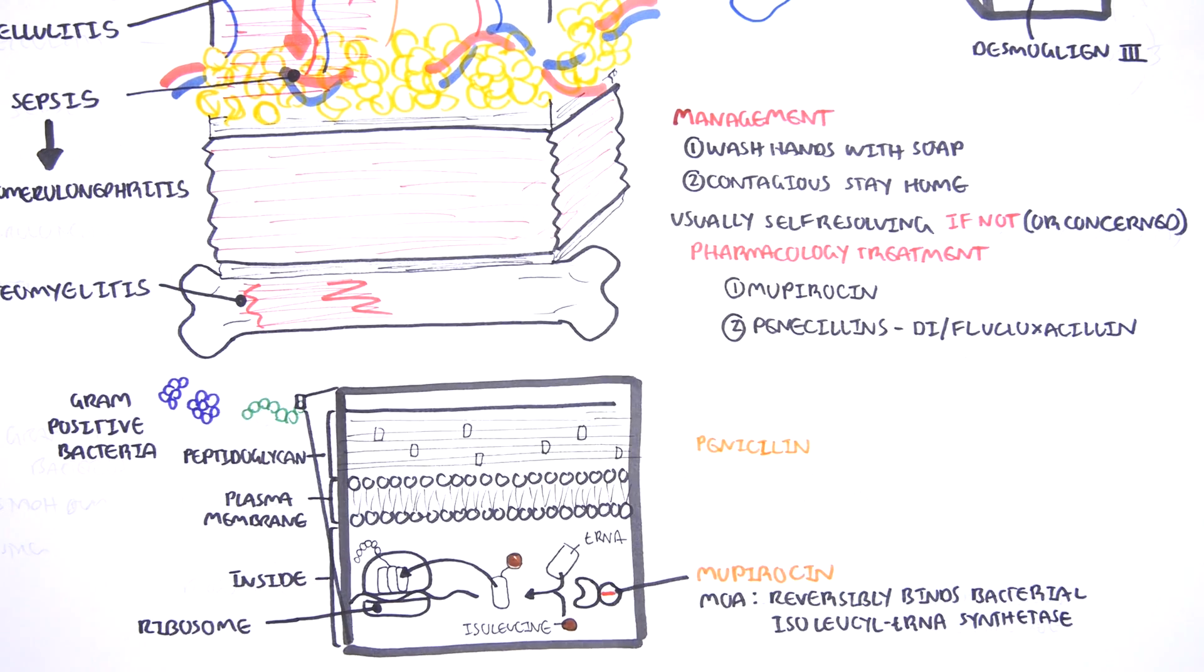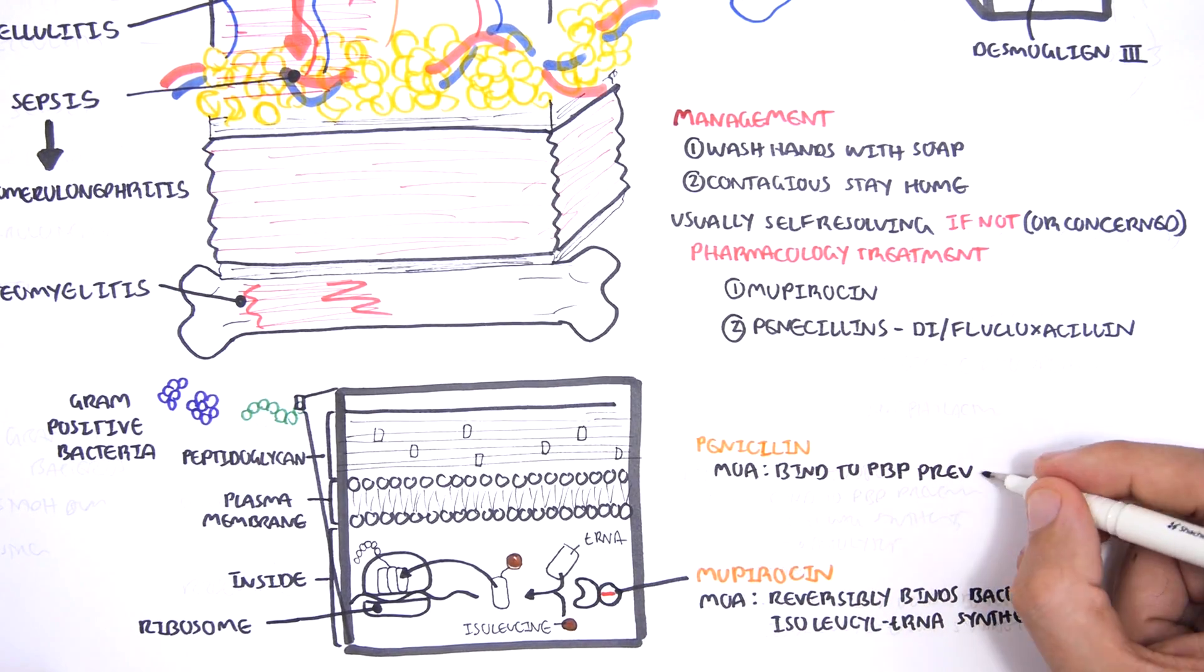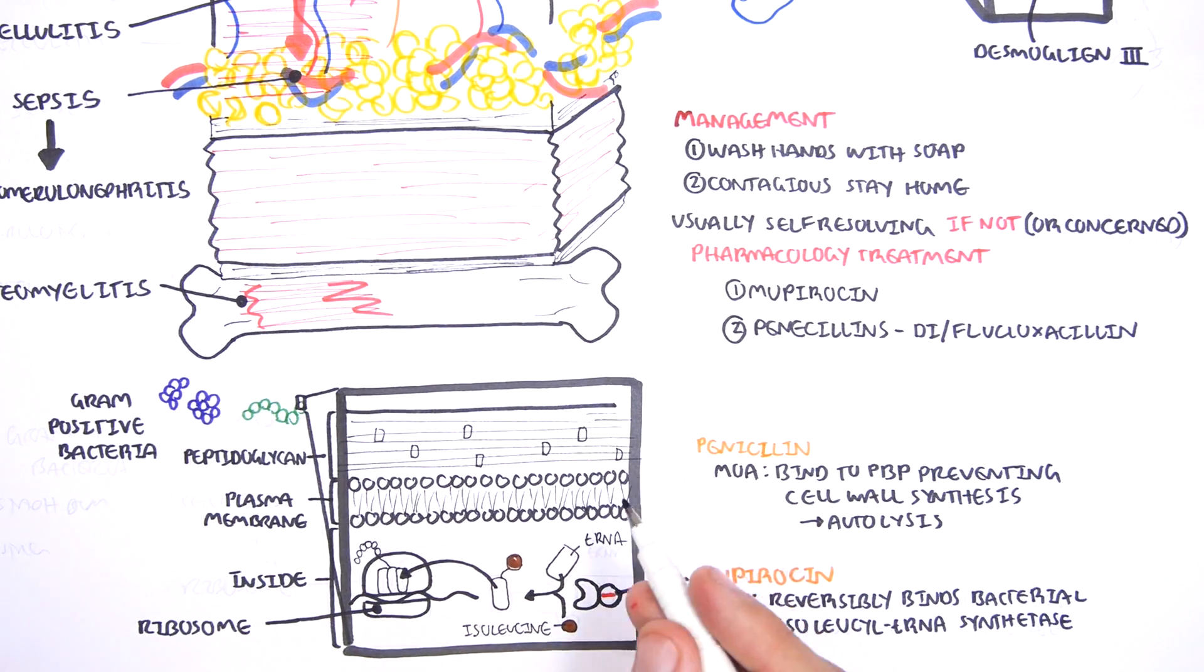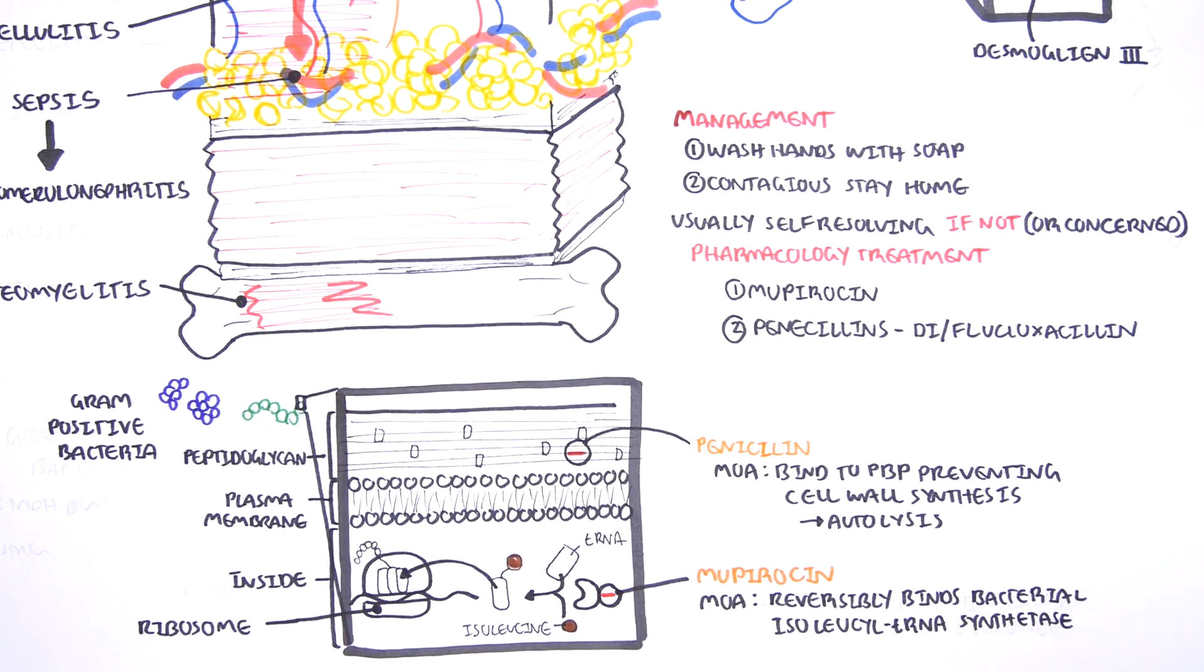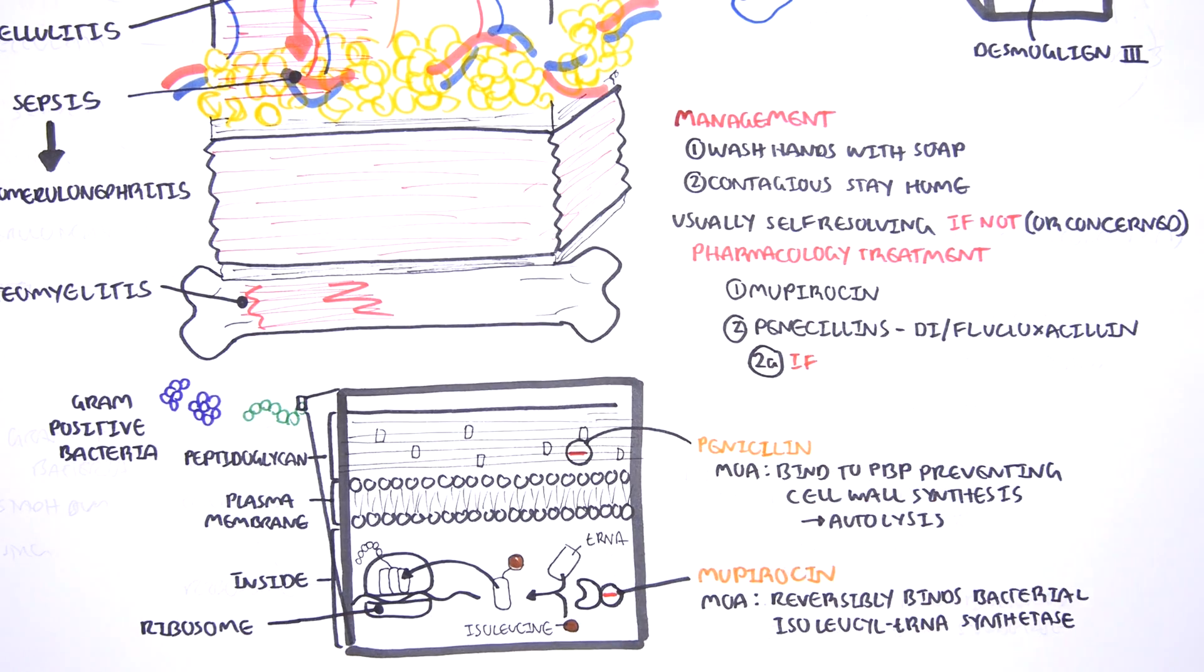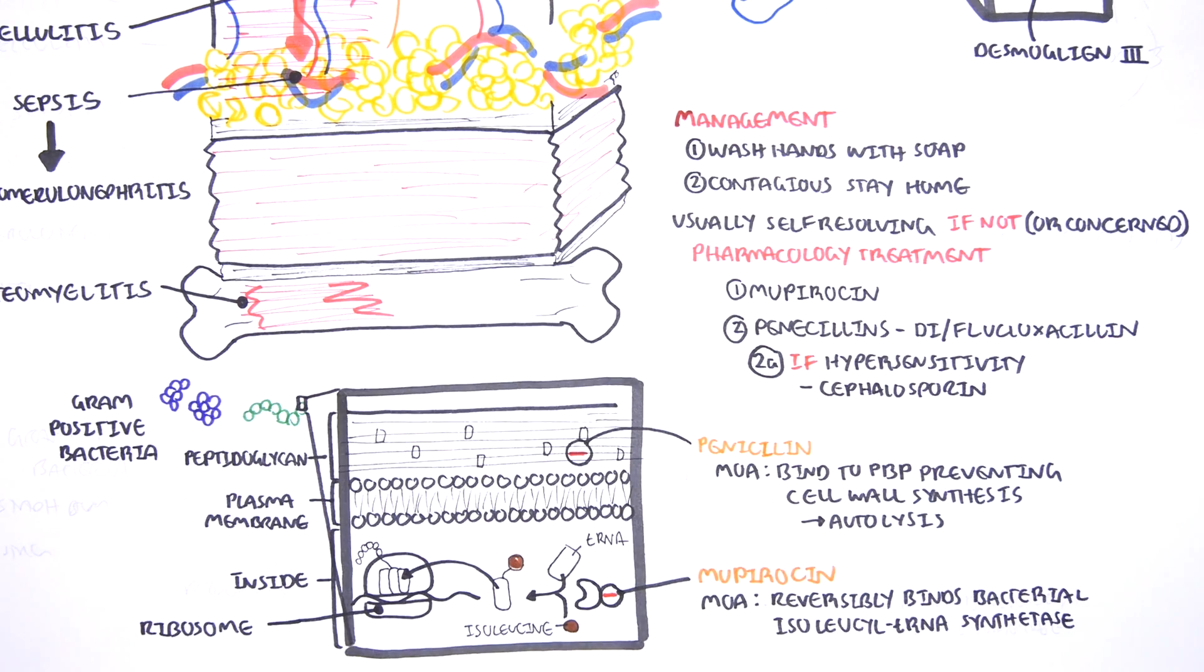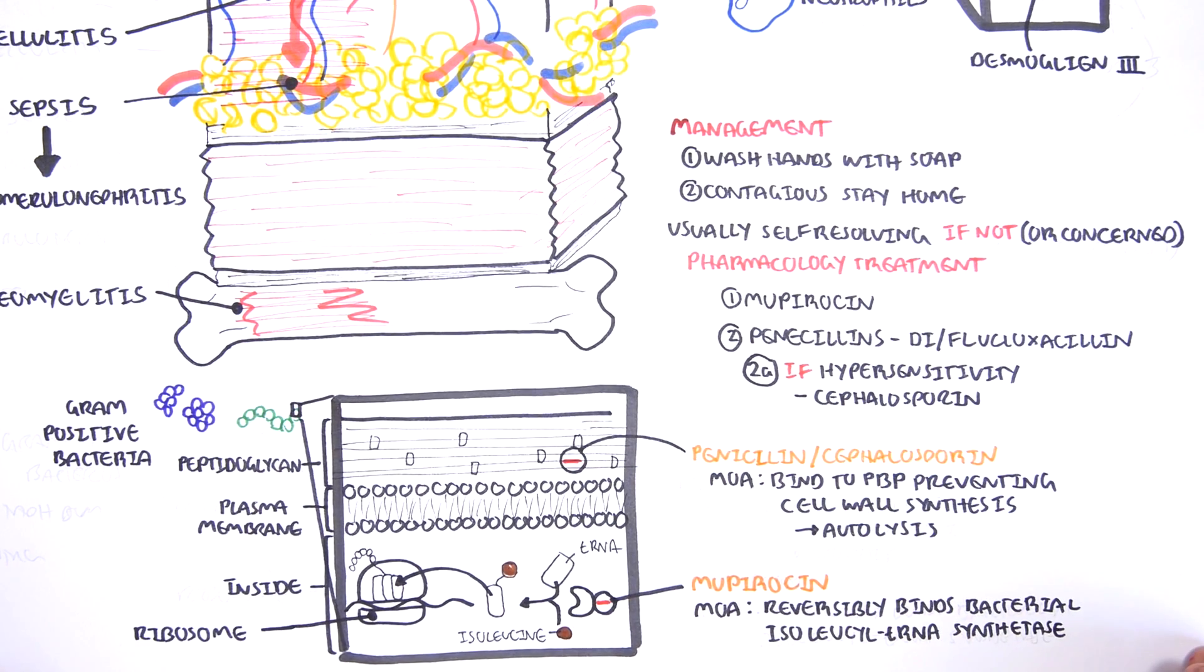Penicillins work by binding onto penicillin-binding proteins on the cell wall and thus disrupt cell wall synthesis, which eventually leads to autolysis of the bacteria. If someone is hypersensitive to penicillins, such as they get some form of reaction, you use cephalosporins as an example. But interestingly, cephalosporins are also beta-lactams and actually work the same way as penicillins.